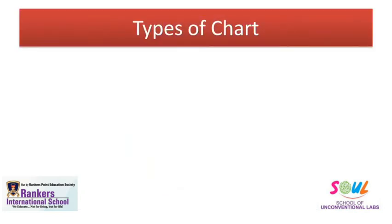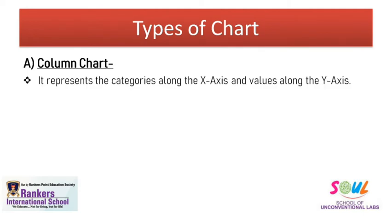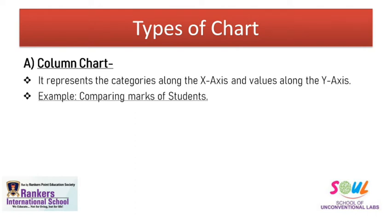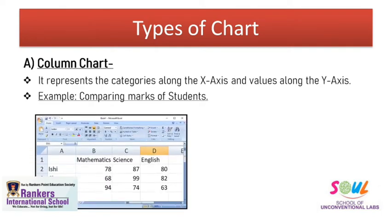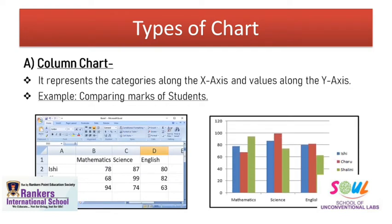Now let's discuss the types of chart. The first category is column chart. A column chart represents the categories along the x-axis and the values along the y-axis. The chart we just inserted and discussed the elements of was a column chart. For example, comparing the marks of students — if this is your data sheet with students' marks, then you can create a column chart where students' marks are represented through vertical bars.